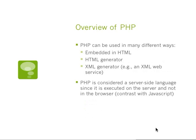PHP can be used in a number of different ways. Most commonly it's embedded directly in HTML, and we're going to see some examples of that in this lecture. It can also be used to generate HTML — a PHP script that outputs HTML, which is then served to a client through the HTTP protocol. Another use of PHP is as an XML generator, which is extremely interesting, especially if you are creating an XML web service where you're creating an XML document provided to some client process.